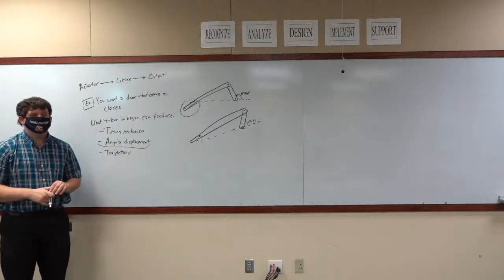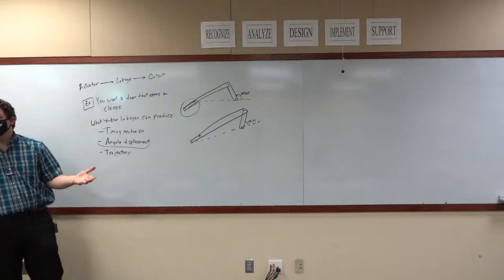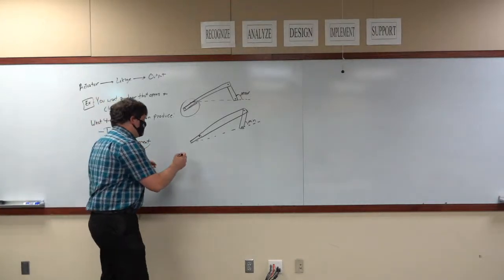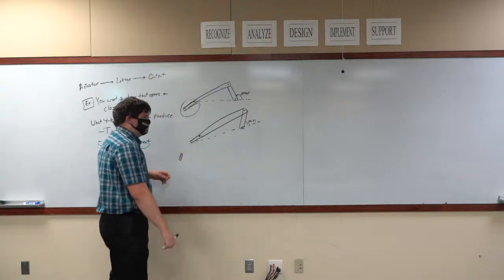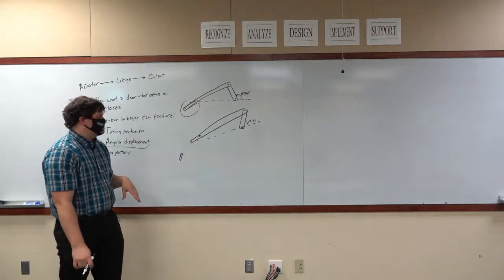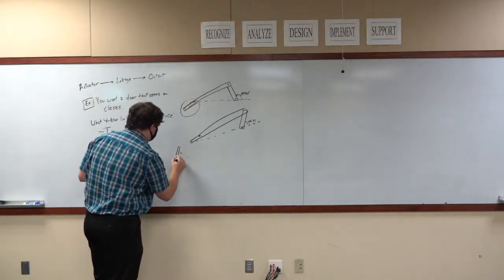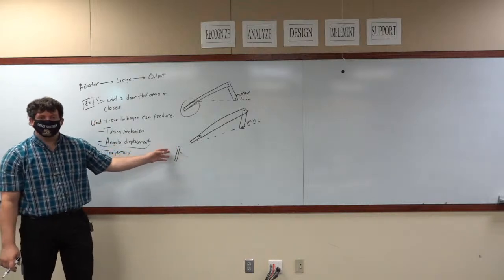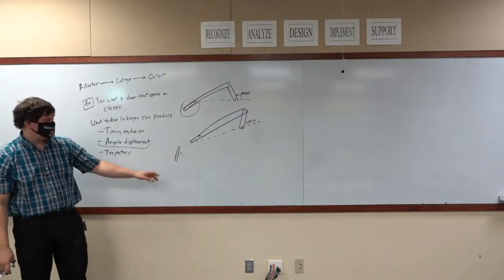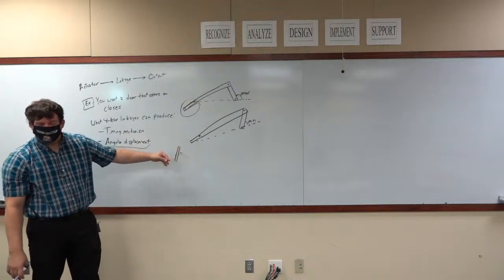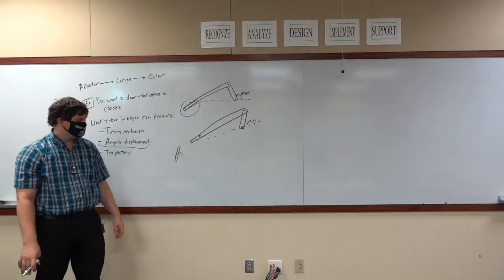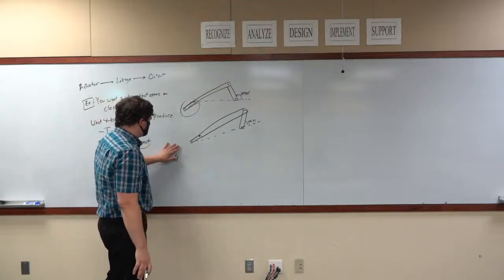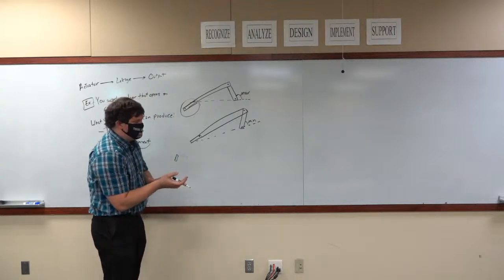With a four bar linkage, you end up having to think about how long you want the links to be. If you have a high torque motor, you can have really long cranks and it's not going to hurt you because it can transmit that power. Every force exerted by that crank — the distance away from the axis of the axle — is the torque. So the longer your crank, the more torque is going to be required by the motor to move it. If you have a low torque motor, you need to have a shorter crank.